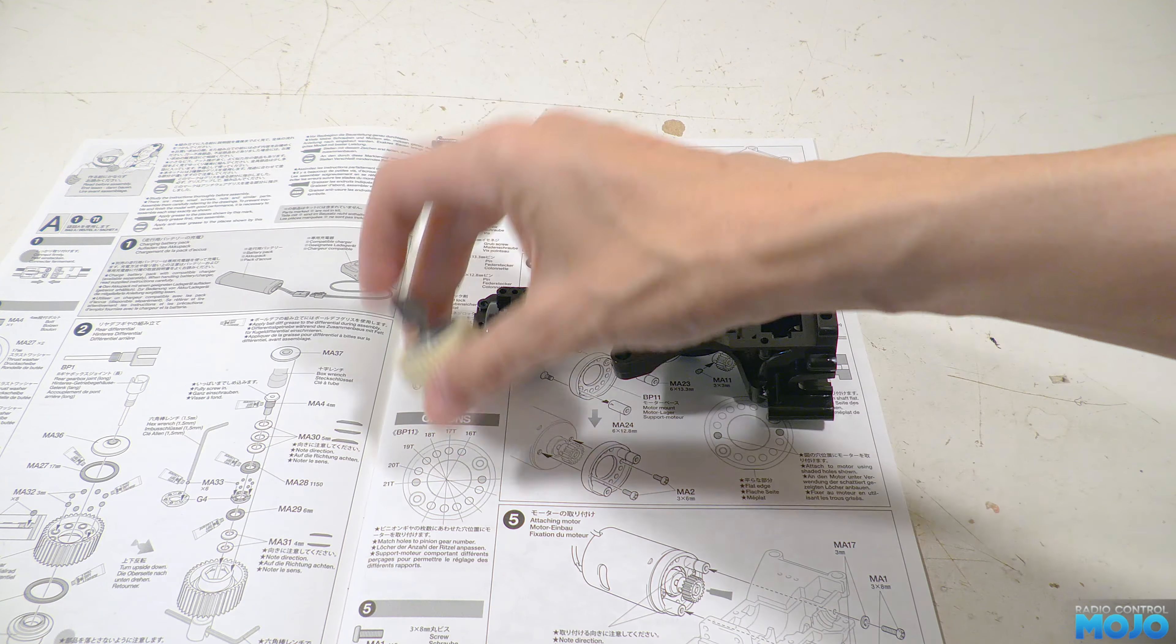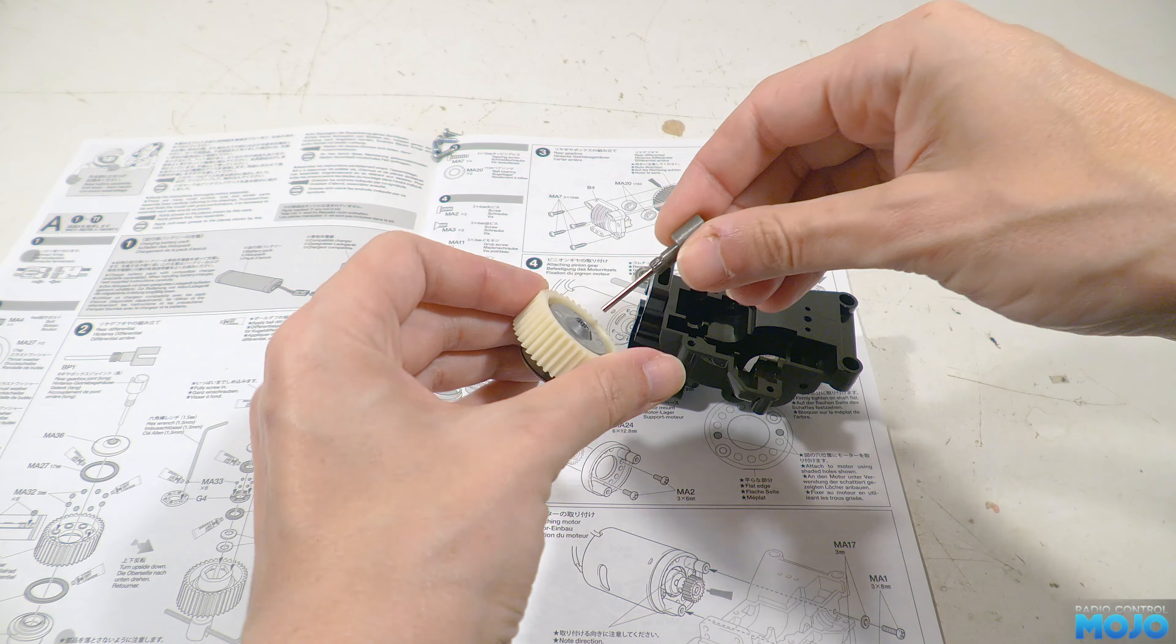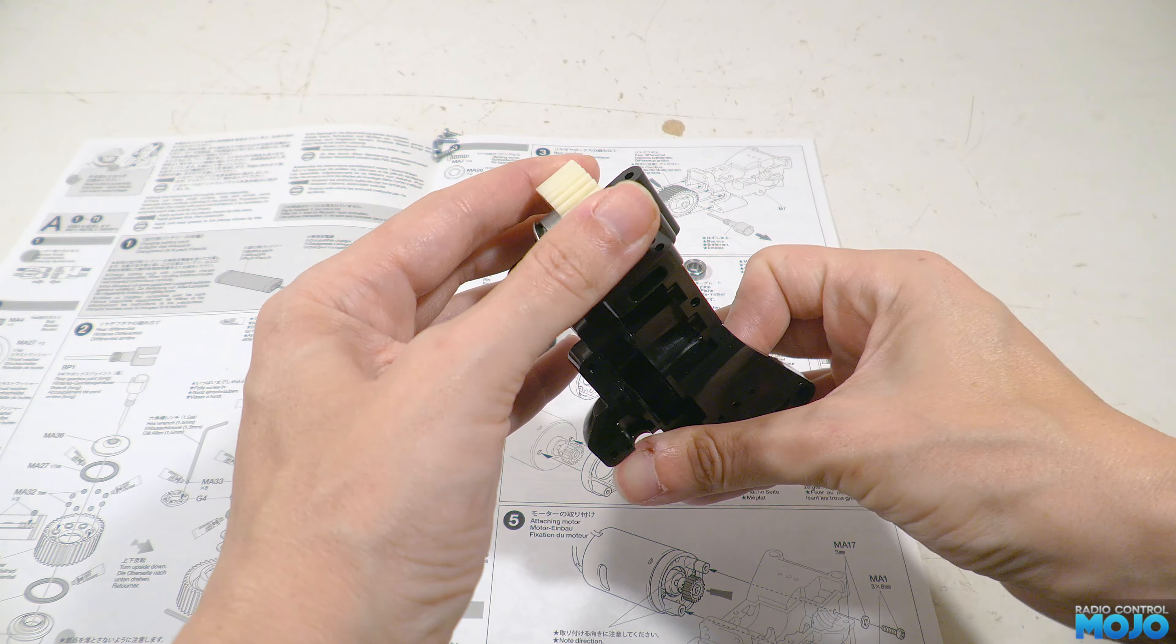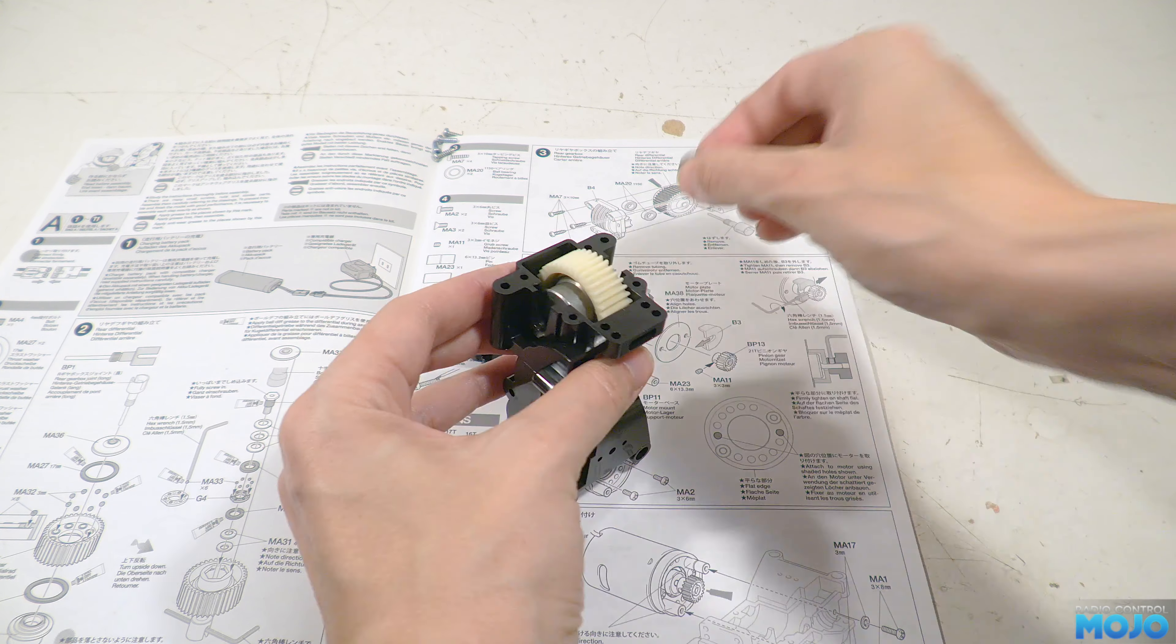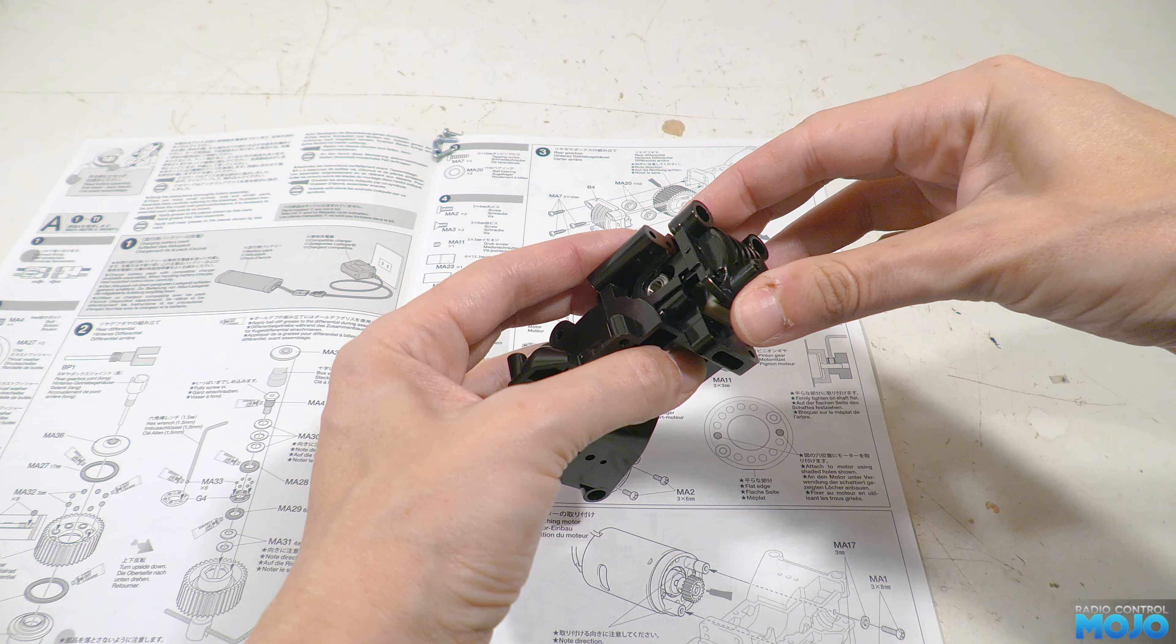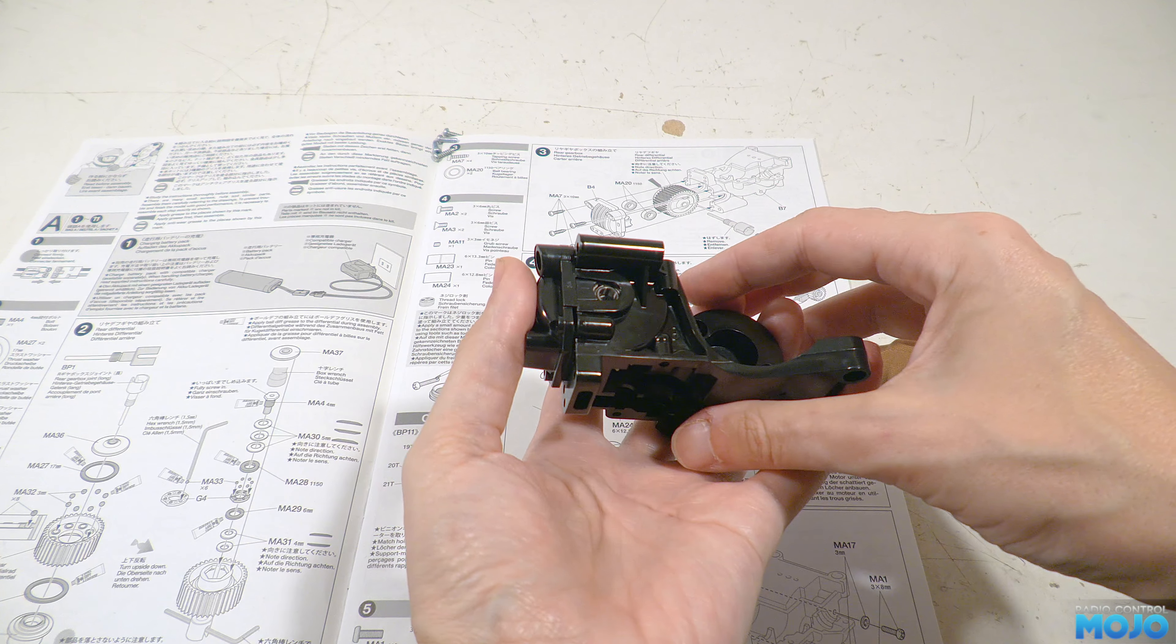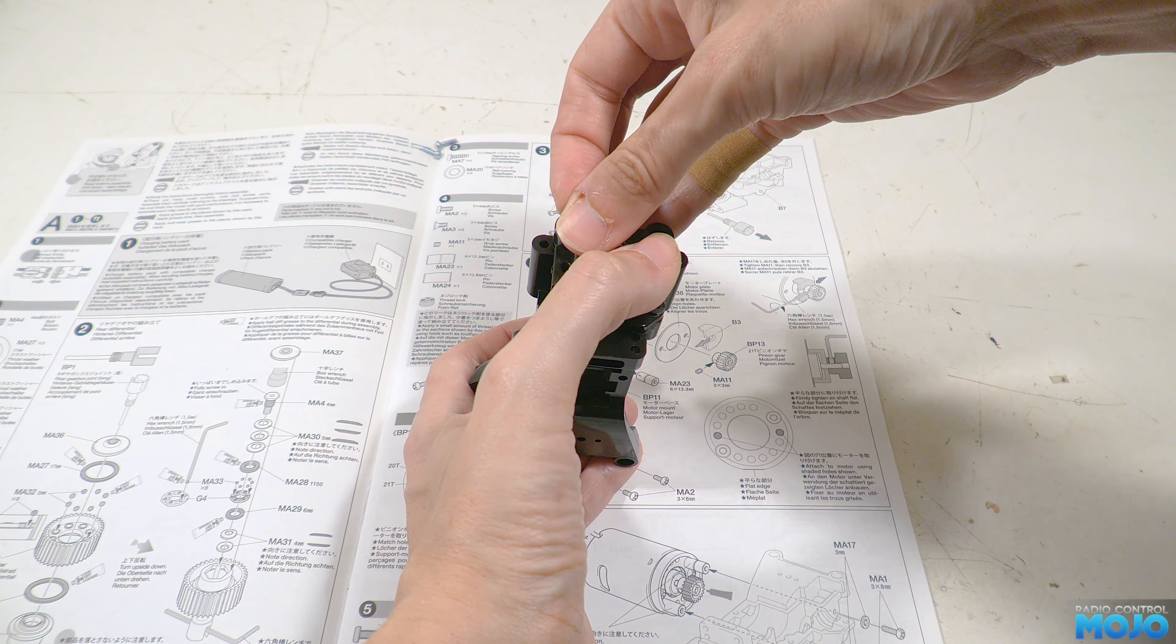First we need to drop the diff into the open end of the gear case. It shouldn't really matter, but as the diff has a large lump on one side, we'll make sure it's the same way round as the diagram, just in case. Then we slide a bearing into the slots on either side of the diff, and we offer up the diff cover. It might need a bit of a jiggle to get it all the way down. The bearings might just get a bit stuck on the sides of the diff. Once the diff cover is fully seated, install the four screws so they're bottomed out, plus a little bit extra.